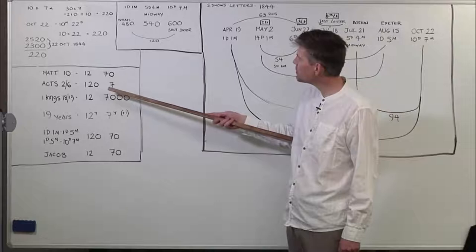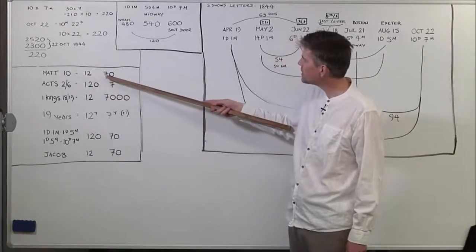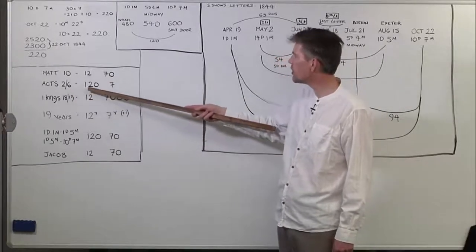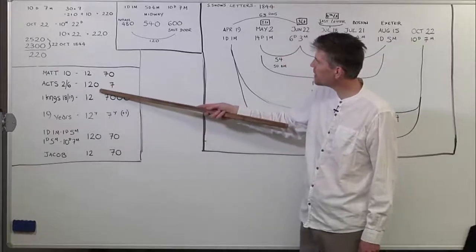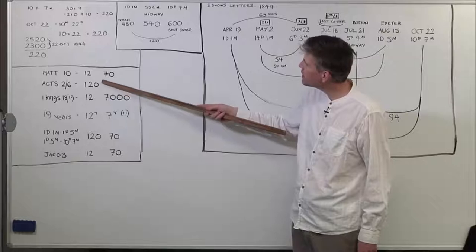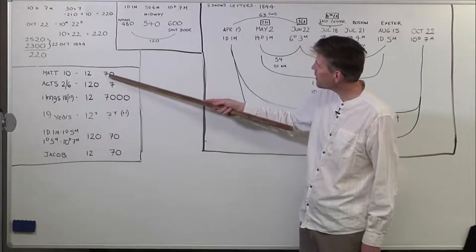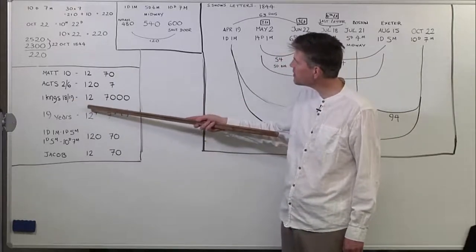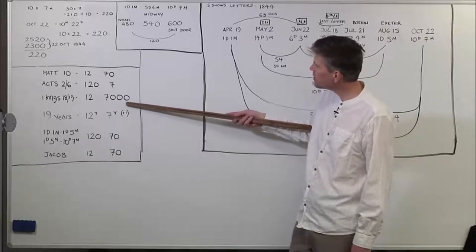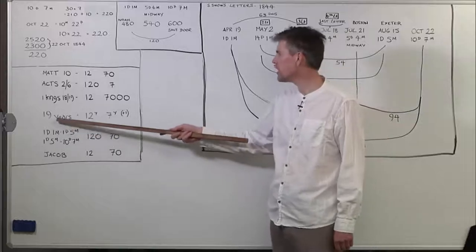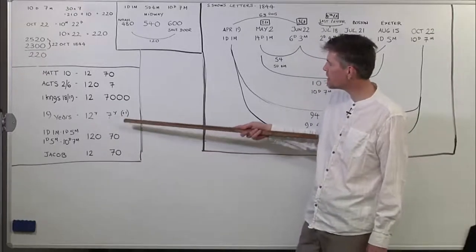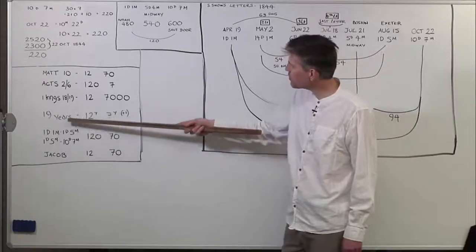Dropping the zero — sometimes we do that. In Matthew 10, there's a 12 and a 70. Jesus sends out 12 disciples and then follows that by sending out 70 disciples. In Acts chapter 2, there's 120 in the upper room, and in Acts chapter 6, seven deacons are emphasized to the church. So you have a zero added to the 12 and a zero off the seven. In 1 Kings 18 and 19, Elijah makes an altar with 12 stones, and then he's told there are 7,000 in Israel that haven't bowed their knee to Baal.